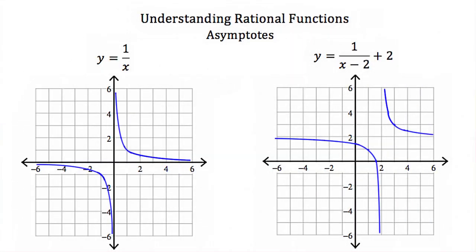So now that we've talked about excluded values, let's talk about asymptotes. Asymptotes are just lines on a graph that represent the excluded values.